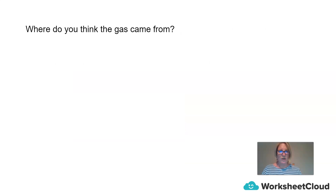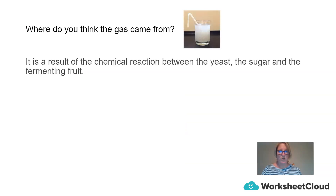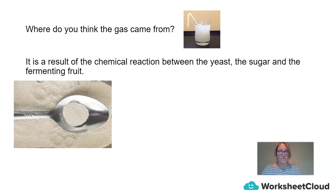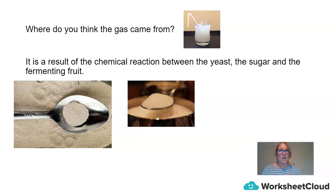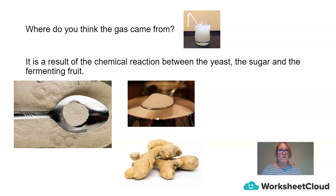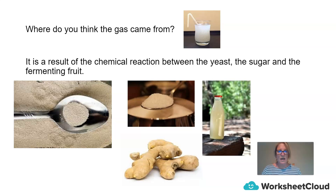Where do you think the gas bubbles came from? It is the result of a chemical reaction between yeast and the sugar. You can either add additional sugar to your experiment, or use the sugars that we find in the fruit — that fruit could be ginger, or pineapple, or apples, or grapes, or any fruit or vegetable you have decided to use. And the end product will be your bottle of ginger beer or pineapple beer.